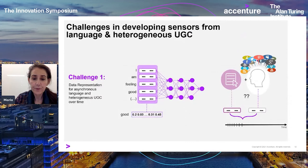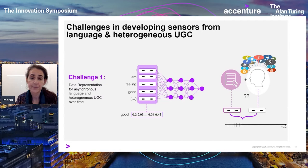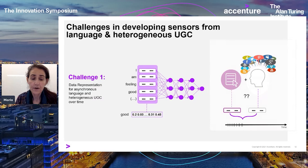For the cognition case, imagine your computer has an application that allows it to track changes in your language use over time and is able to present you or people of your choice with evidence that there is a sustained change in your linguistic ability. Or, if you have bipolar disorder, your device can tell you that a manic or depressive phase is coming up. These are some example use cases.